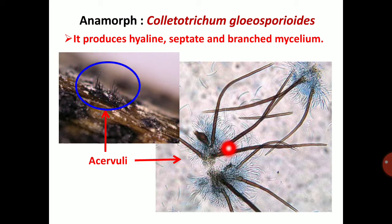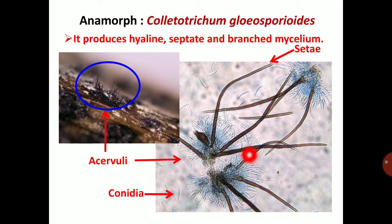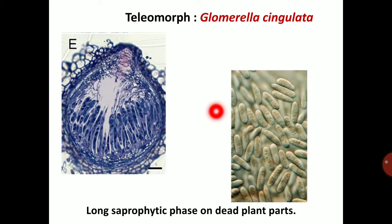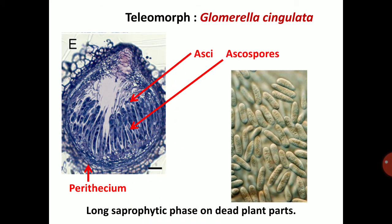Acervulus is the asexual fruiting body of Colletotrichum. It contains setae — the black colored projections of the acervulus — and also contains conidiophores with conidia. The teleomorph stage is Glomerella singulata. It contains perithecia; perithecia contain asci and ascospores, with a long saprophytic phase on dead plant parts, producing ascospores.